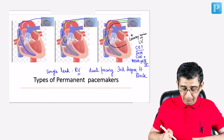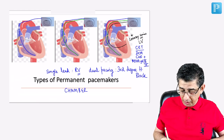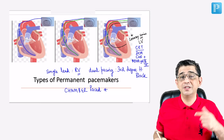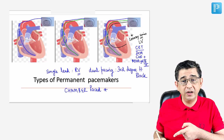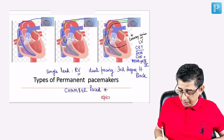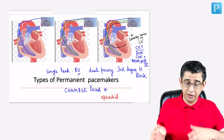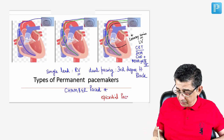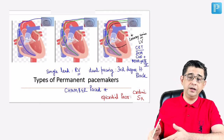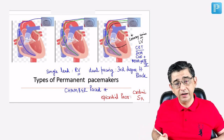In this slide I described pacemakers with respect to chambers paced: only atria, only ventricle, both, or right atria + right ventricle + left ventricle via coronary sinus (CRT). Additionally, during cardiac surgery an epicardial pacer — placed on the outside of the heart — can also be used, though this is primarily restricted to CTBS use and less common. So options include single lead, dual, CRT, and epicardial pacemaker.